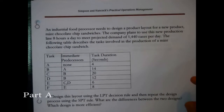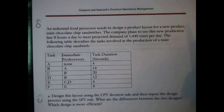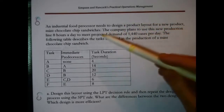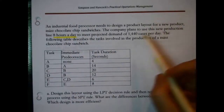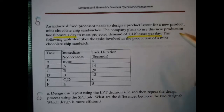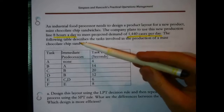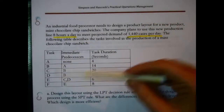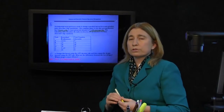An industrial food processor needs to design a product layout for a new product — mint chocolate chip sandwiches. The company plans to use this new production line eight hours a day to meet a projected demand of 1,440 cases per day. The following table describes the tasks involved in the production of mint chocolate chip cookie sandwiches, and we're going to be assigning these tasks to workstations in order to design a line.